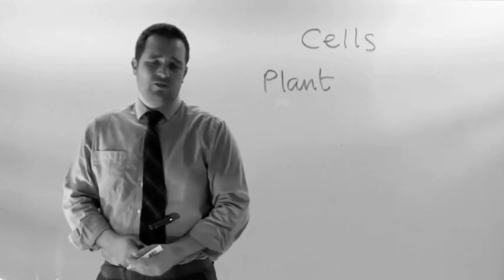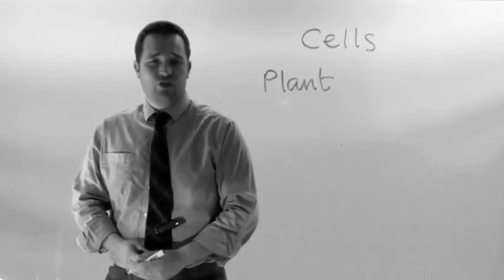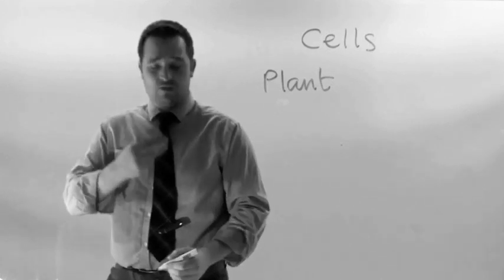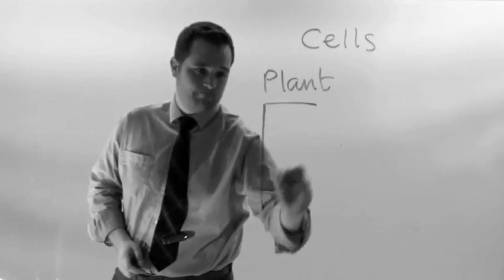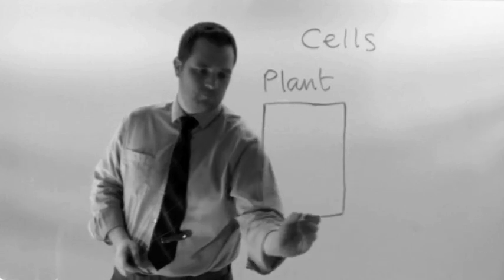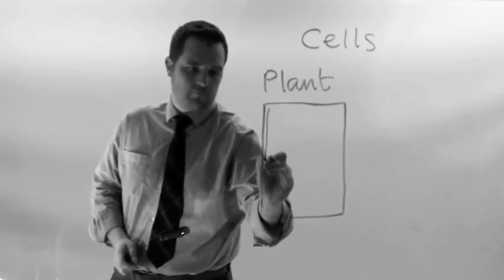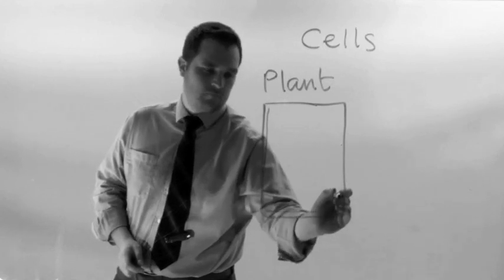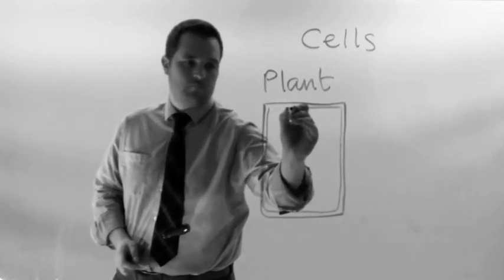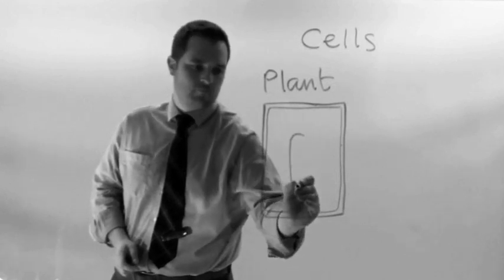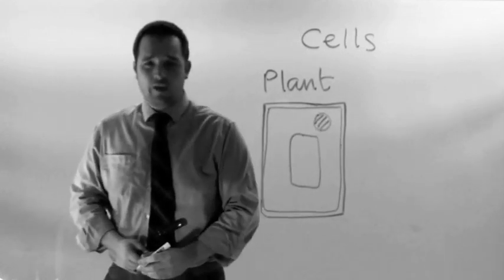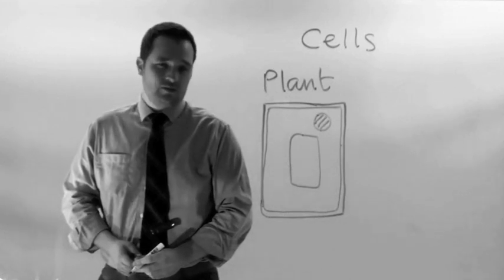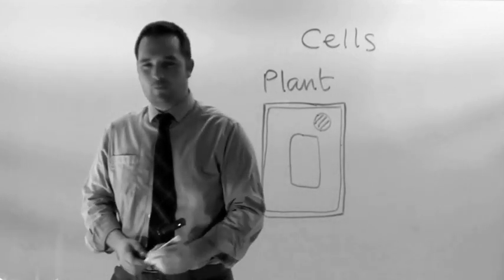The plant cell doesn't look like the animal cell, but it does share three of the animal cells' labels. Like the animal cell, it has a nucleus, cytoplasm and a cell membrane.